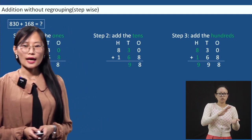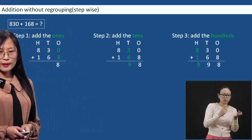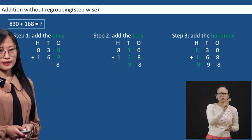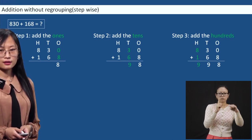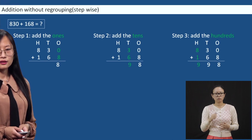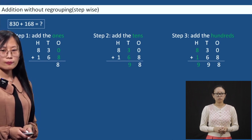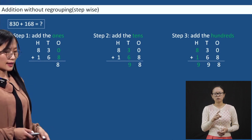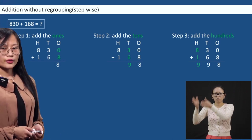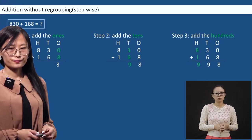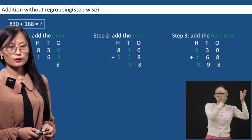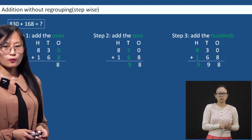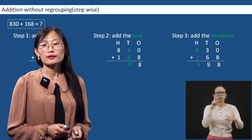Now step three, we will add the hundreds. The ones place and tens place are done. So we will add the hundreds place, written in green color. Eight plus one is nine.